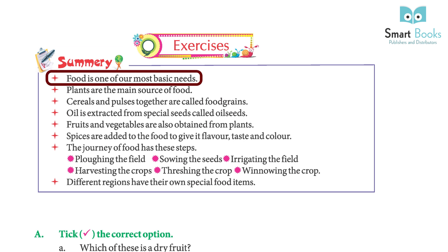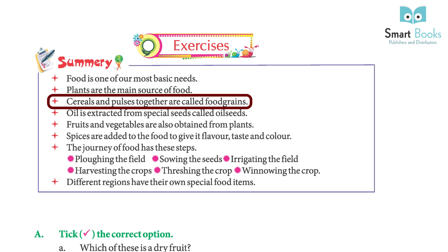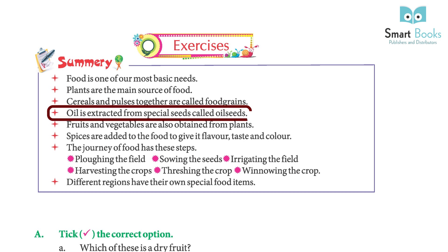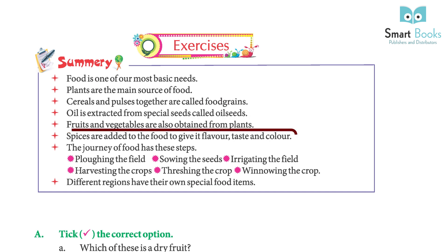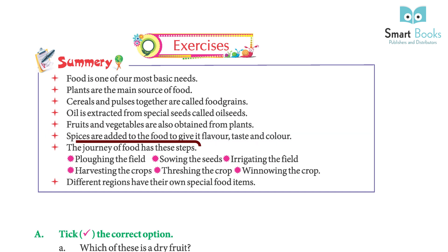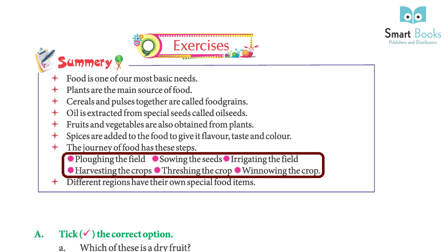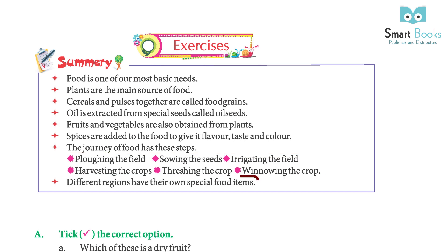Summary: Food is one of our most basic needs and plants are the main source of food. Cereals and pulses together are called food grains. Oil is extracted from special seeds called oil seeds. Fruits, vegetables, and spices are also obtained from plants. The journey of food includes plowing the field, sowing the seeds, irrigating the field, harvesting, threshing, and winnowing. Different regions have their own special food items.